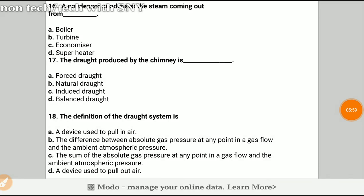Question number 16: A condenser condenses the steam coming out from? The answer will be B, turbine. Question number 17: The draft produced by the chimney is? The answer will be B, natural draft.